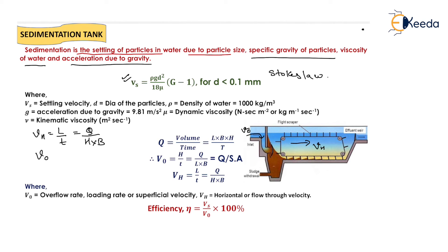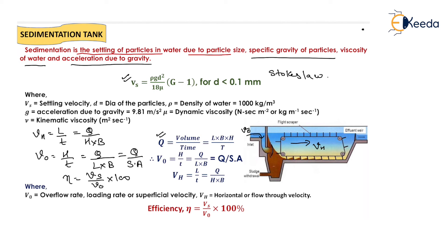Similarly, overflow velocity V₀ = H/T = Q/(L × B), also known as discharge divided by surface area. One more formula is the efficiency formula: Efficiency = (Vs / V₀) × 100. To summarize: Q = L × W × H / T; V₀ = Q / surface area; Vh = Q / (B × H); and efficiency = (Vs / V₀) × 100. That covers all the preliminary treatment of wastewater.